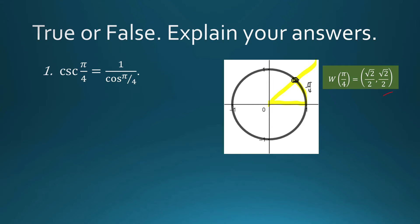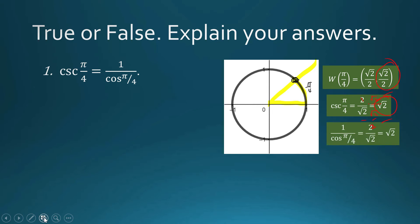Cosecant of π/4 is the reciprocal of sine of π/4. Sine of π/4 is √2/2, so the reciprocal is 2/√2. We multiply by √2/√2 to rationalize, giving us √2. Now, 1 over cosine of π/4 is also √2. So this statement is TRUE.